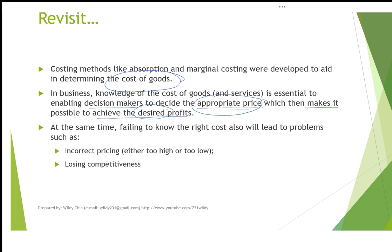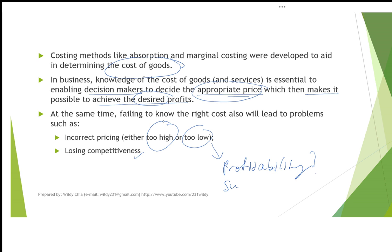It is important to note that failing to know the right cost will lead to problems such as incorrect pricing. If you end up having a cost that's too high, then that leads to a price that's too high as well, and this will surely affect competitiveness. If you derive a cost that's too low, then it results in the other problem — it affects profitability. Low cost results in lower prices; yes, you do achieve faster revenue growth, but there is the issue of profitability. Having a cost that's too low will result in issues such as profitability and whether the business can be sustainable.